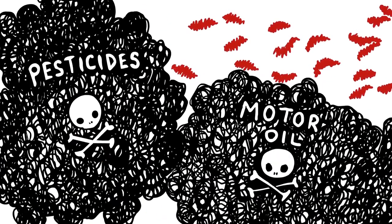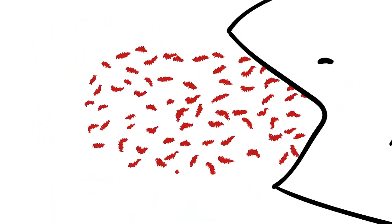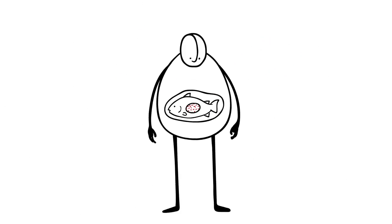When they reach the ocean, they act like sponges sucking up other pollutants around them. They're like little toxic bombs full of motor oil, pesticides, and industrial chemicals that end up in the bellies of fish, and eventually in the bellies of us. It's gross.